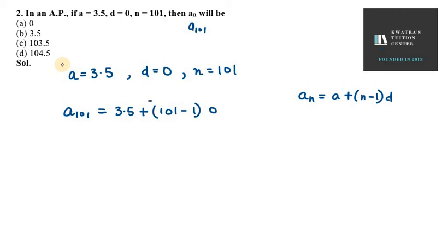So that means the second term will be 0 because any number times 0 is 0. So it is 0. So we have 3.5 as a_101. That means my 101th term is 3.5, that is option B.